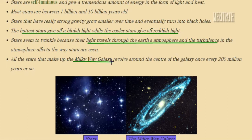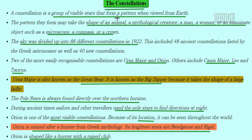All the stars together make up the Milky Way. This Milky Way galaxy revolves around the center of the galaxy once every 200 million years. In this image, you see bright twinkling stars, and this is the complete collection of stars which forms the Milky Way galaxy.